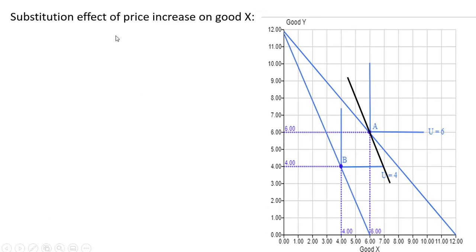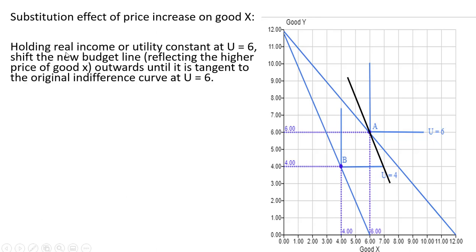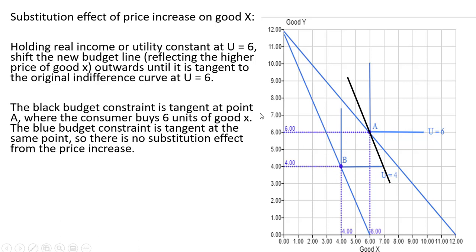Let's look at the substitution effect graphically. Holding real income or utility constant at u equals 6, we're going to shift the new budget line — which reflects the higher price of good x — outwards until it touches our u equals 6 indifference curve. The black budget constraint is tangent at point a, where the consumer buys 6 units of good x. The blue budget constraint, reflecting the original prices, is tangent at the same point, so therefore there is no substitution effect. There is no rotating along this indifference curve.